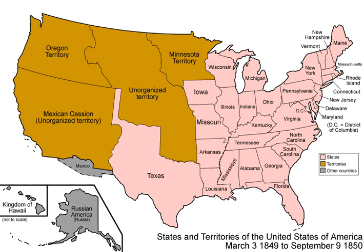The delay of hostilities for ten years allowed the free economy of the Northern states to continue to industrialize. The Southern states, largely based on slave labor and cash crop production, lacked the ability to industrialize heavily. By 1860, the Northern states had added many more miles of railroad, steel production, modern factories, and population to the advantages already possessed in 1850. The North was better able to supply, equip, and man its armed forces, which would prove decisive in the later stages of the war.